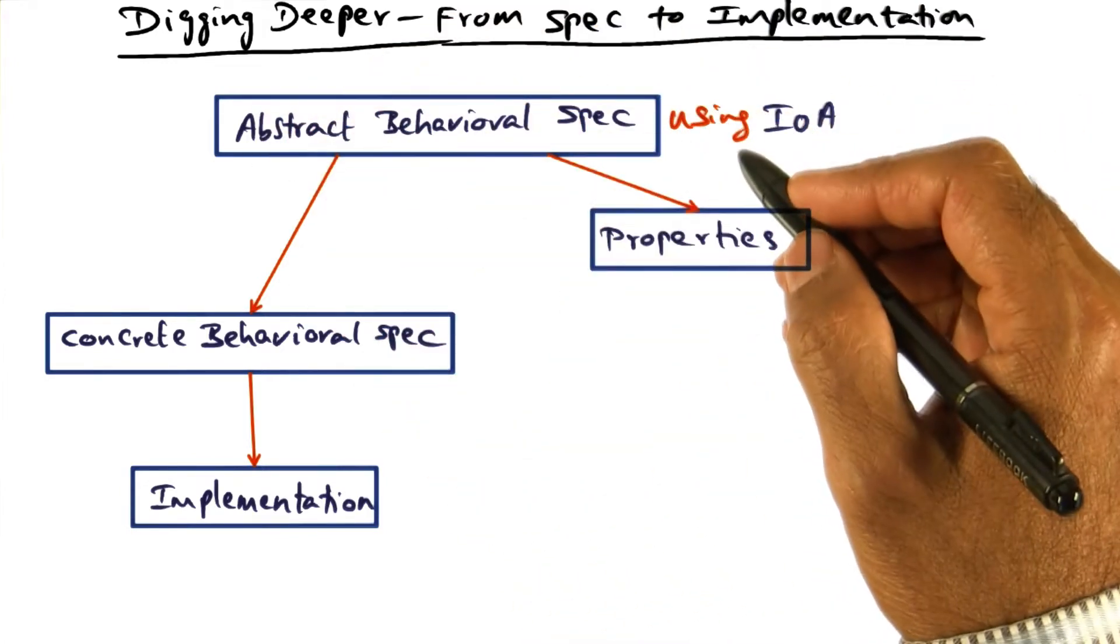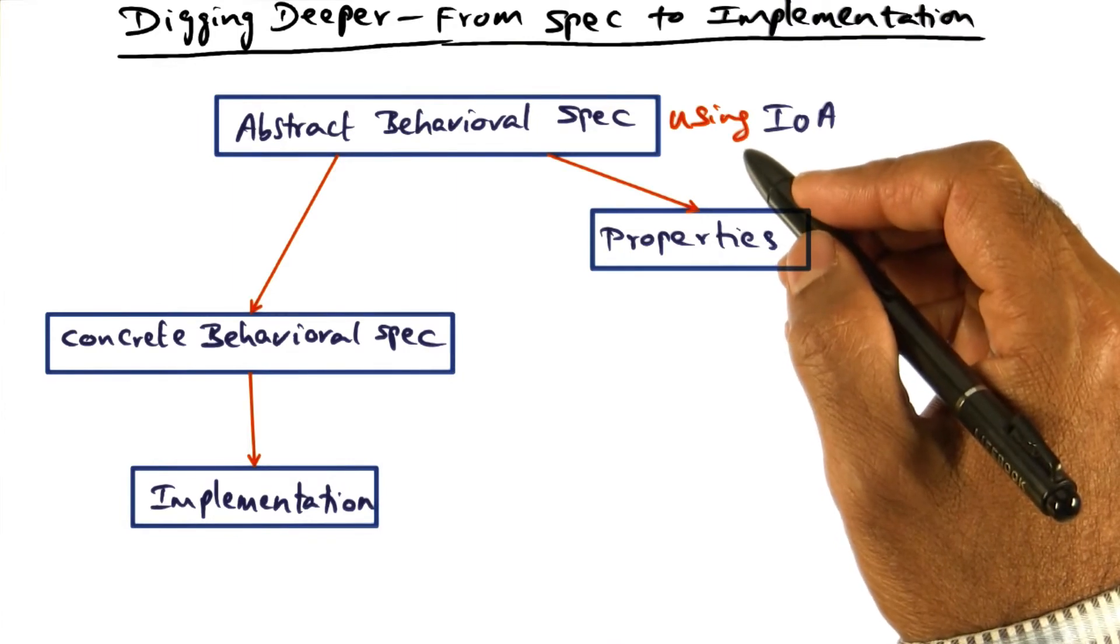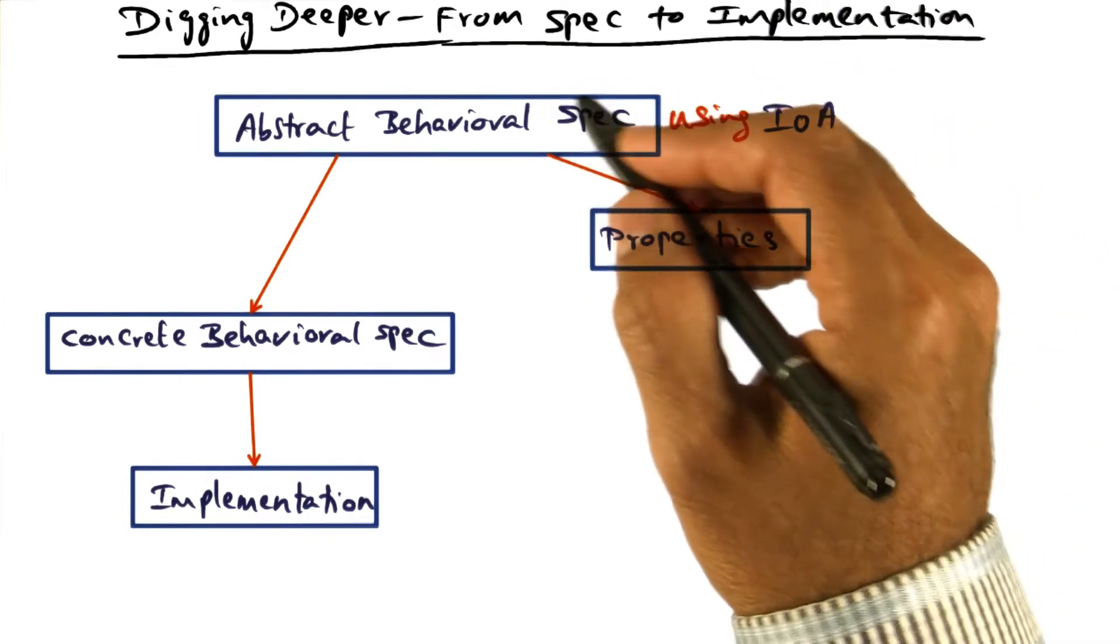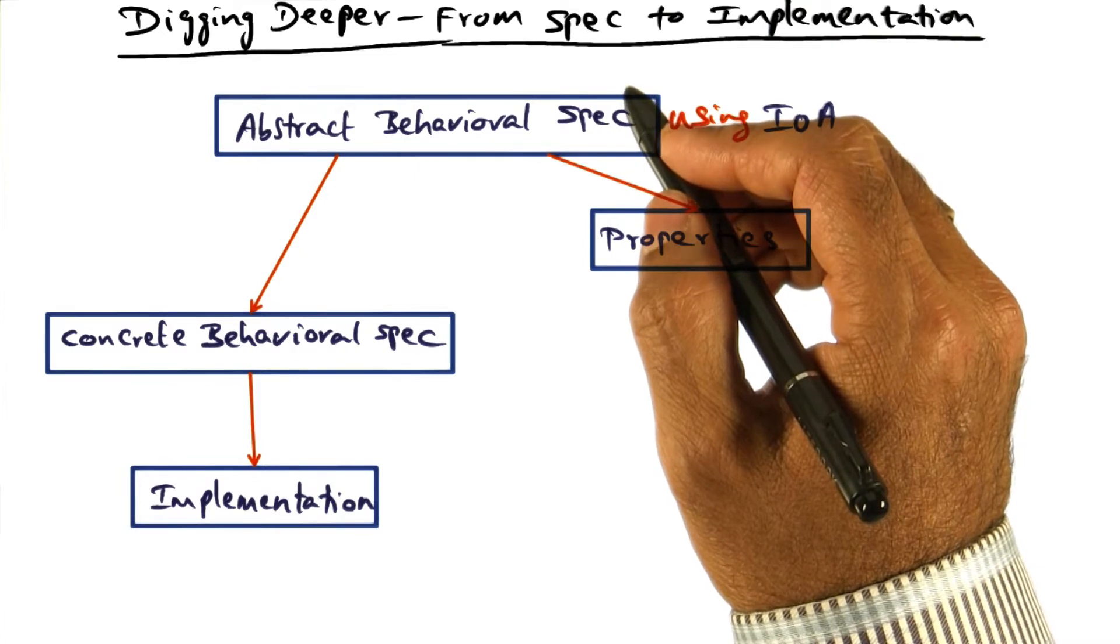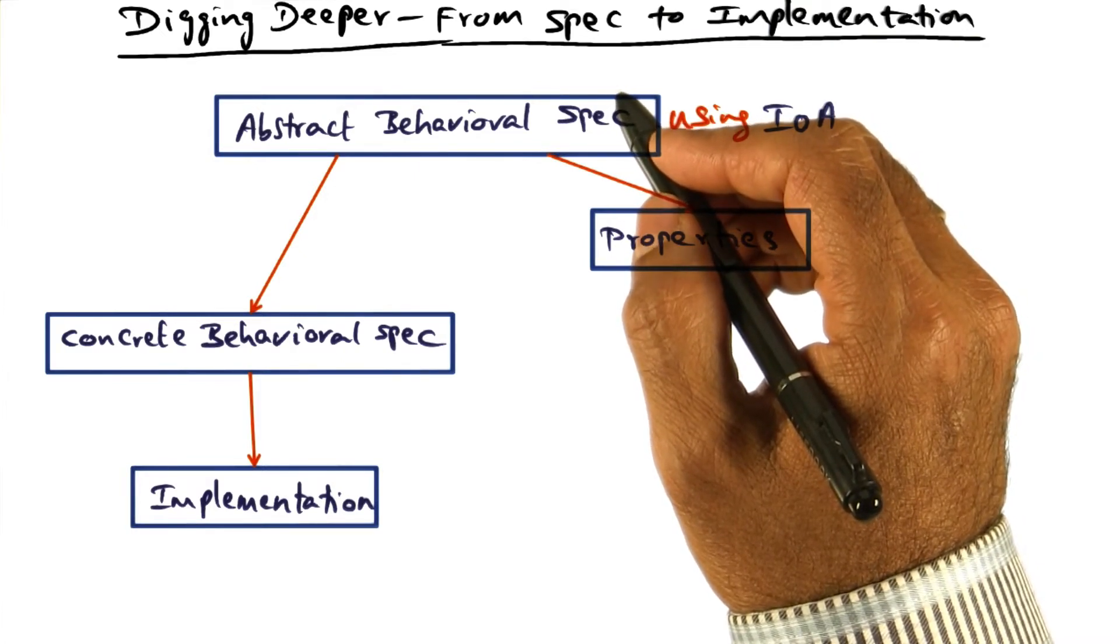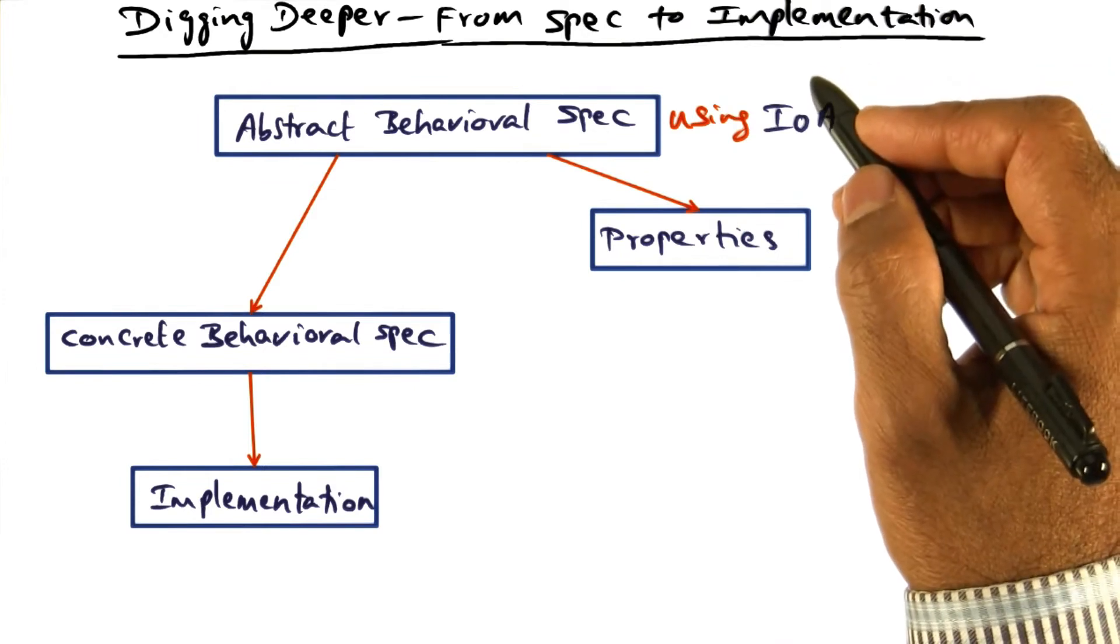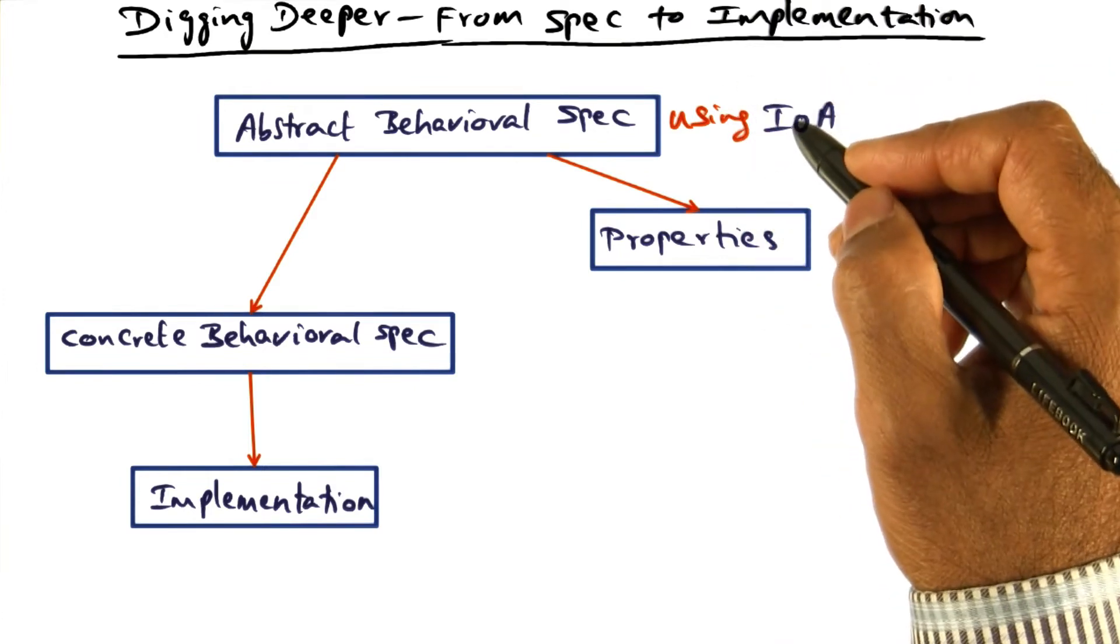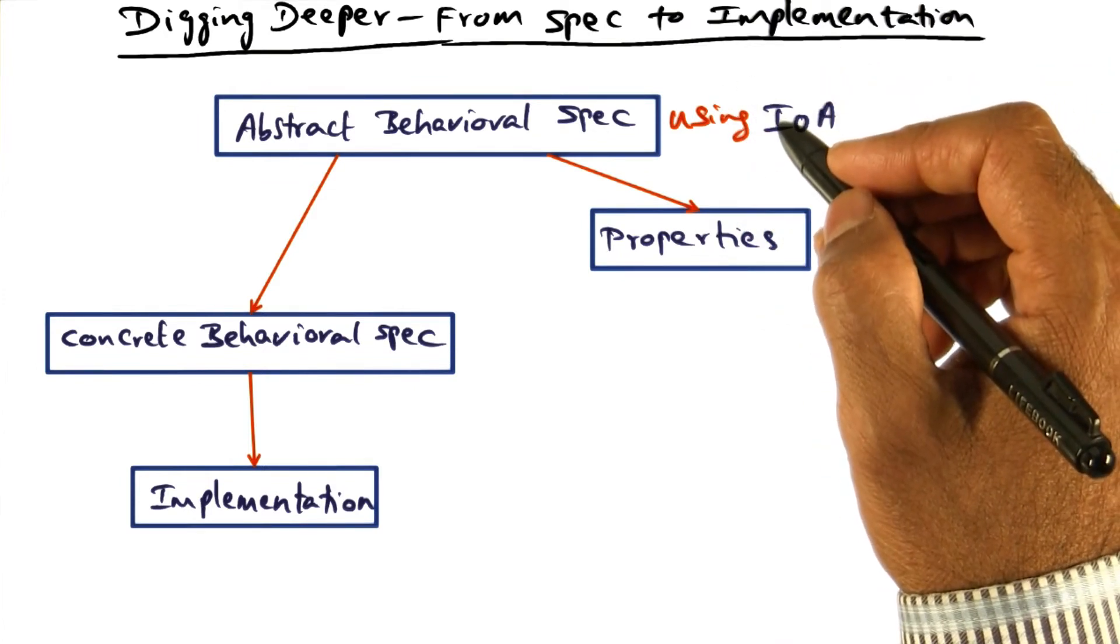The abstract behavioral spec is simple and lends itself to deriving properties about the behavior of the system, not the execution, but the behavior of the system, such as safety and liveness. It is not executable code, even though the syntax of IO automata is similar to C.